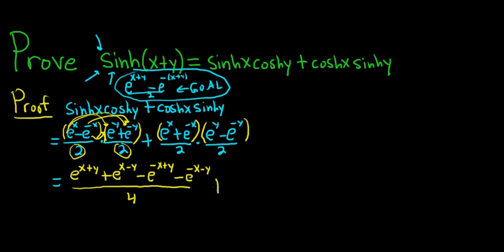Then we have our plus sign. And we're going to do the same thing with the second piece. So e^x times e^y. Again, we add the exponents. So e^(x+y). Then distribute. So here it's going to be a minus. So minus e^(x-y).